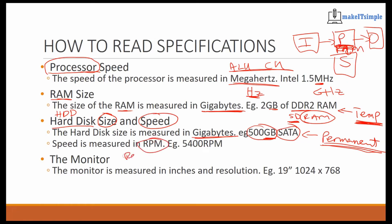Speed is usually measured in RPM — revolutions per minute. Remember the video where we saw the hard drive actually spinning? How many times it spins per minute determines how fast data can be accessed. A hard drive might spin at 5400 RPM, and sometimes you can get one that goes at 7200 RPM. Beyond that it would be industrial, because spinning too fast creates friction and too much heat means destruction.